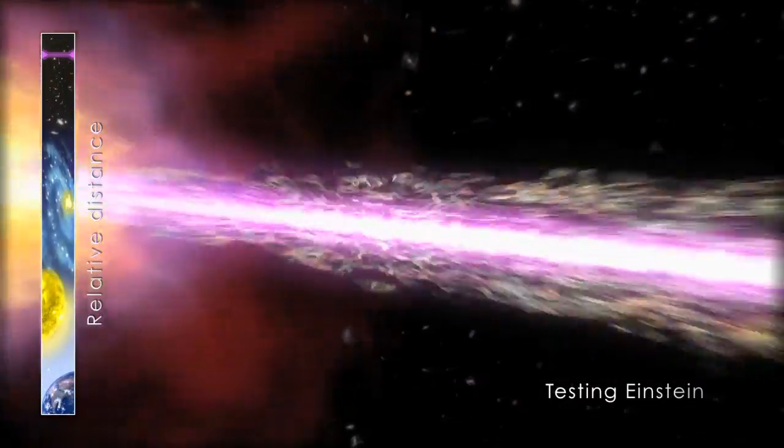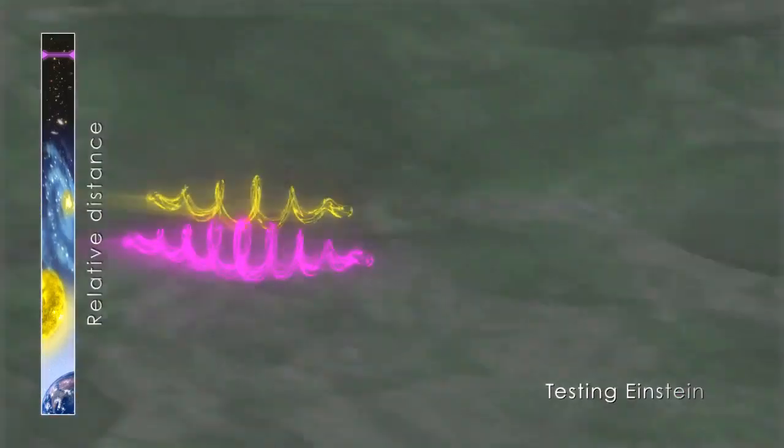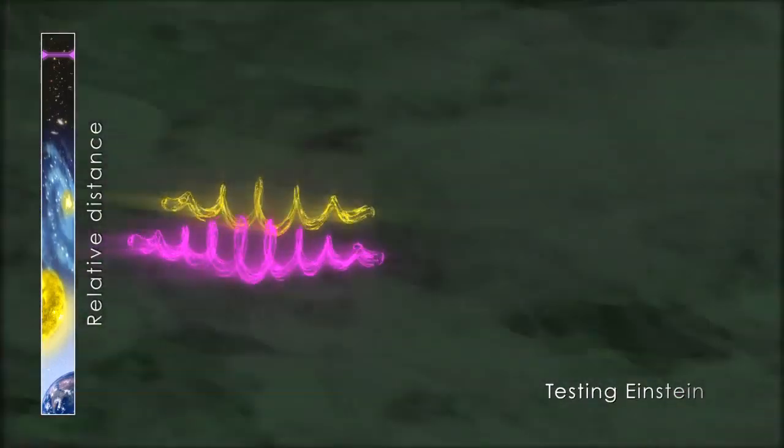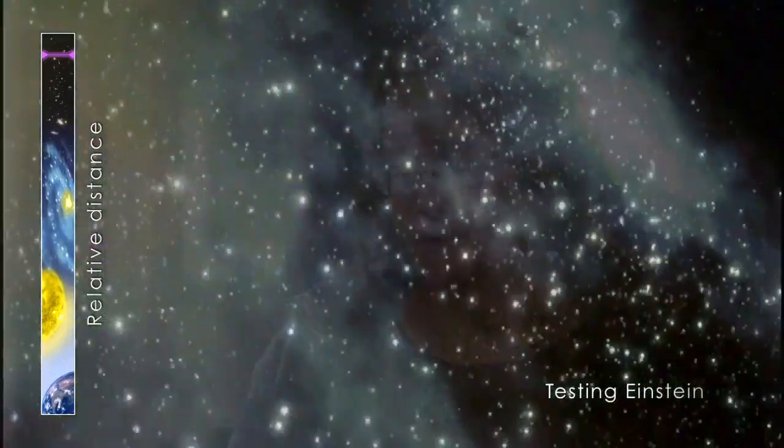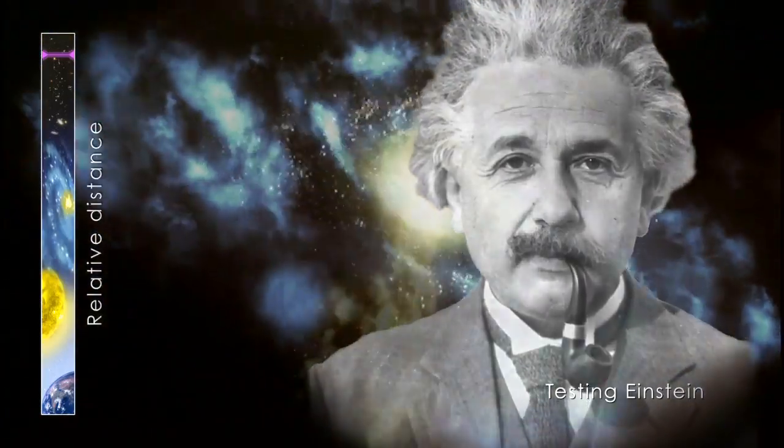Fermi looks at gamma rays, the highest energy form of light, and it just surprised everyone with a discovery about the fabric of space and time. Because Fermi saw no delay in the arrival time of the two photons, it confirms that space and time is smooth and continuous, as Einstein had predicted.